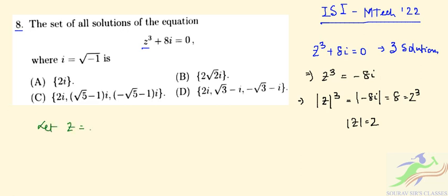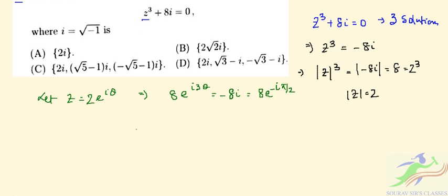Let z = 2e^(iθ). Then z³ = 8e^(i·3θ), which equals -8i. We can write -8i as 8e^(-iπ/2) using Euler's identity.